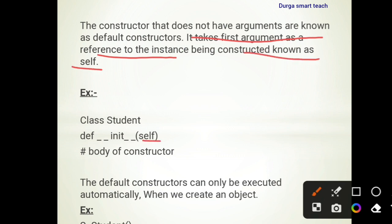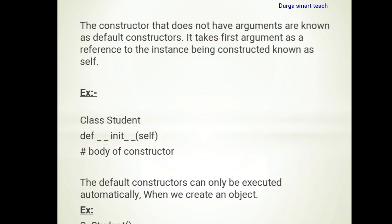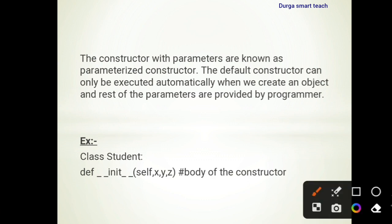Self is used to point to the current object. For example, class Student contains def __init__(self) — this is a constructor, but it does not contain any additional parameters, so it is known as a default constructor. The default constructor is executed automatically when we create an object.